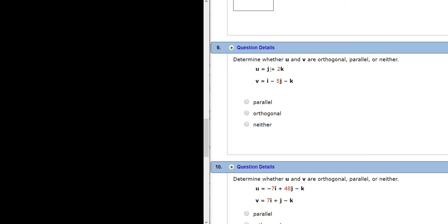Let's do problem number nine. This is actually a really interesting question. It says, determine whether u and v are orthogonal, parallel, or neither.